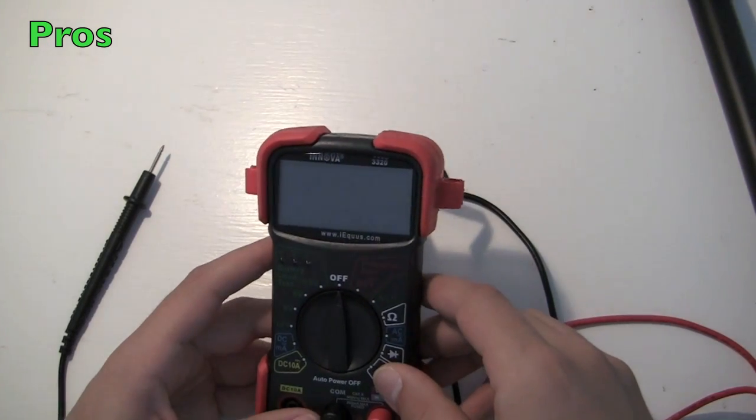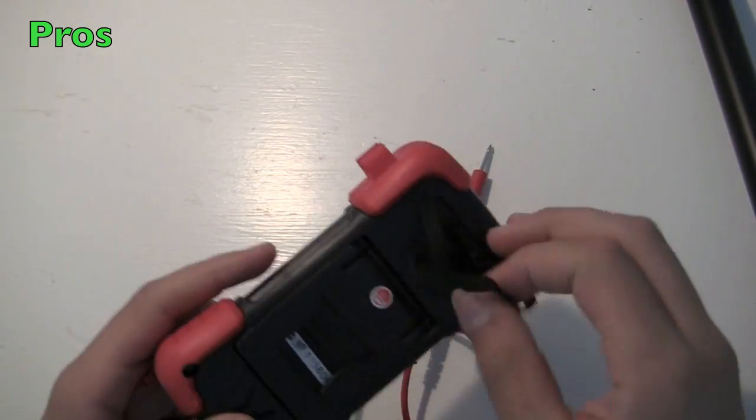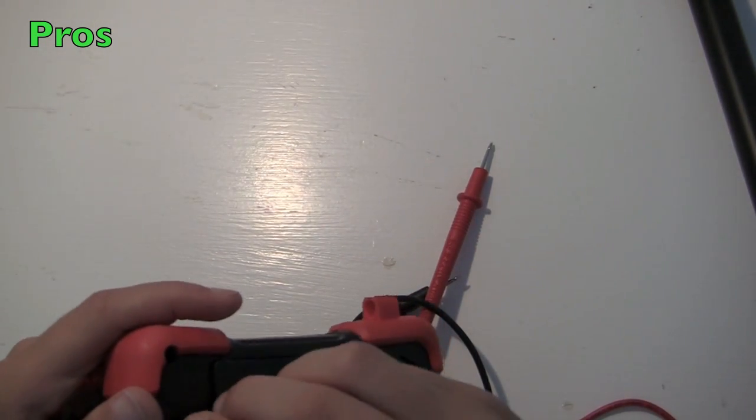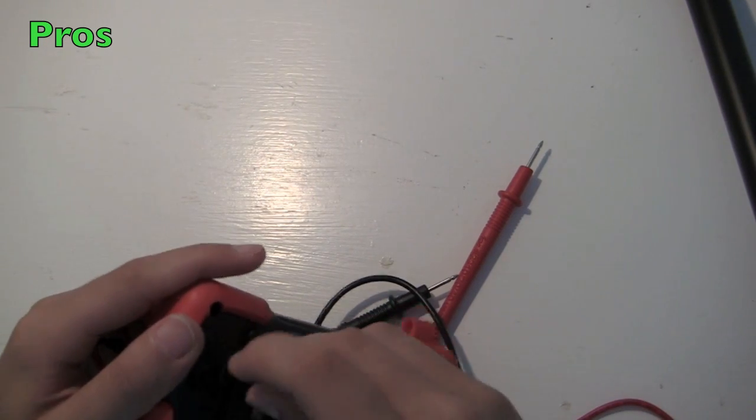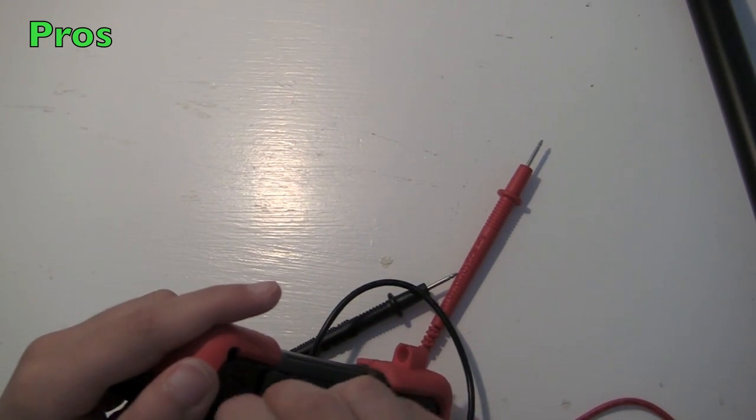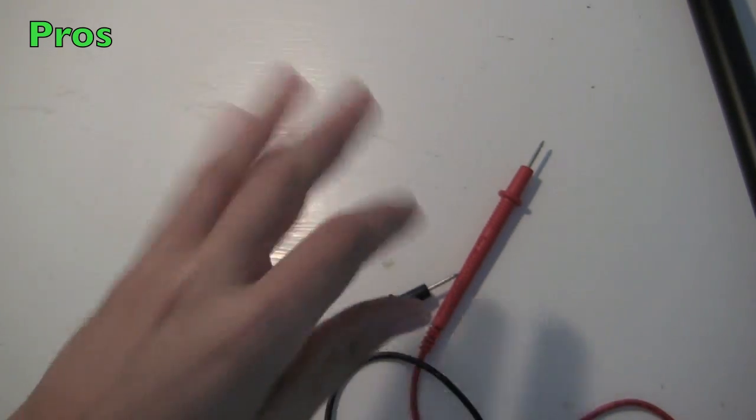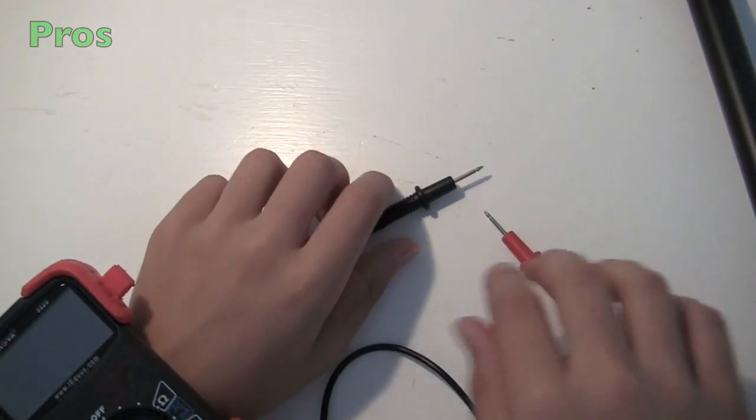Also, if you need two free hands to use the probes to measure whatever you're measuring, you can put this elastic band thing and hook it around this little hook right here. It's kind of hard to get it on the hook, but how it's supposed to work, you can just put it on your wrist like this, and then just use the probes and measure.